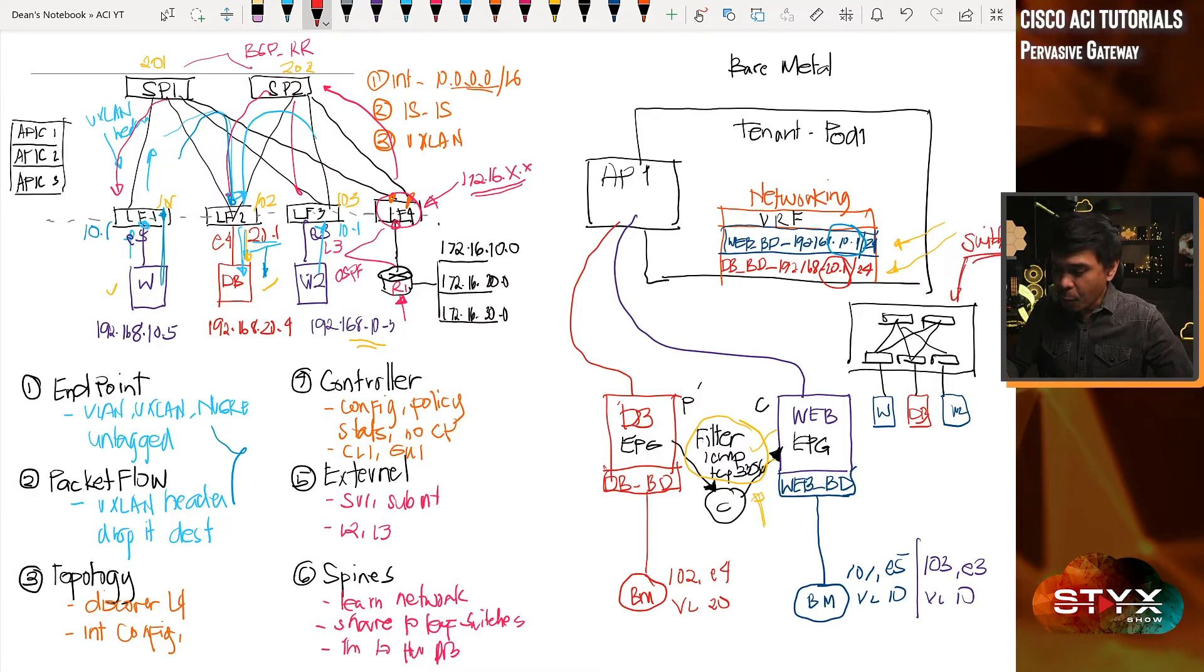If you think this as one switch, you don't really need to understand what's in between this line card. Well, let's assume these leaves are line cards. You don't need to know how the line cards connect to the fabric modules and how fabric modules connect to the line card.